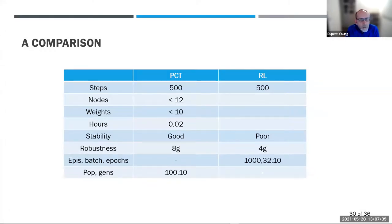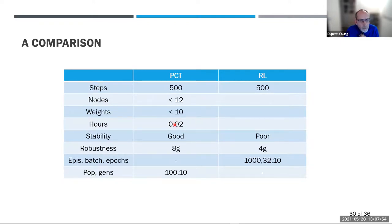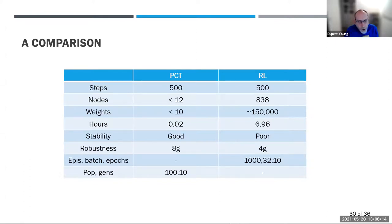Comparing the two approaches in detail: both were trained over runs of 500 steps each. The PCT controller ended up with about a dozen nodes and about 10 weights and took a couple of minutes to train. The reinforcement learning algorithm, on the other hand, had about 800 nodes, 150,000 weights, and took about seven hours to train — quite a significant difference.